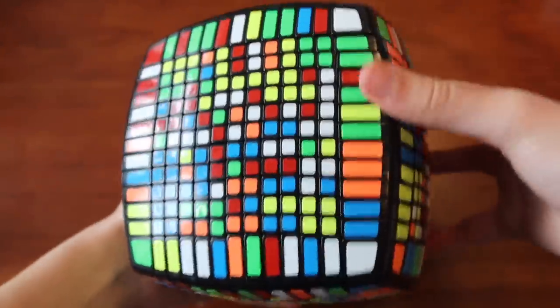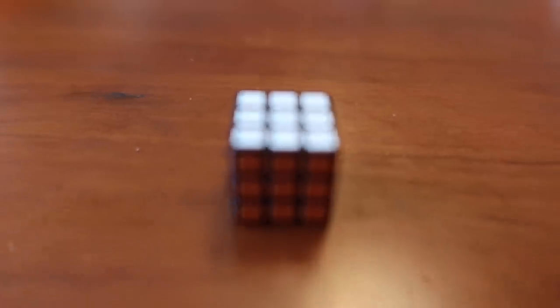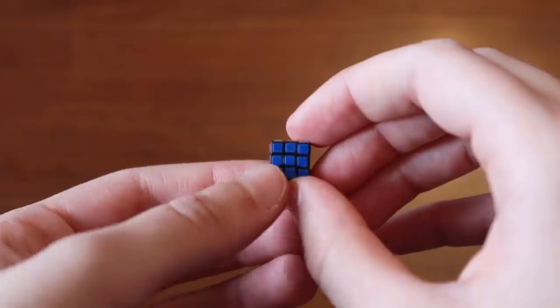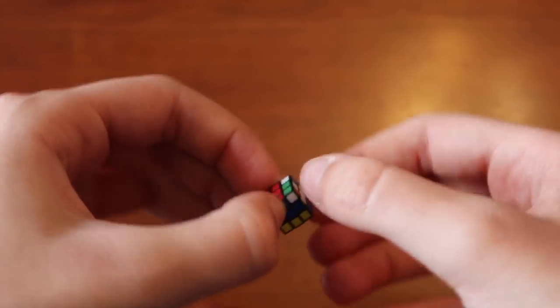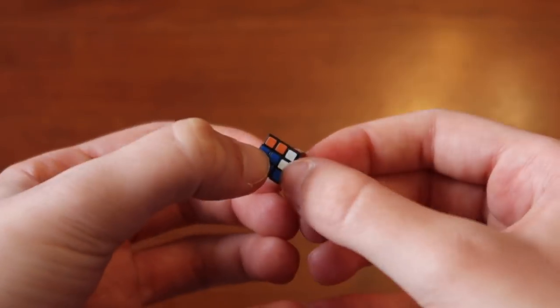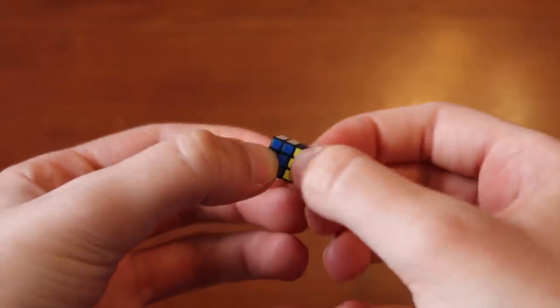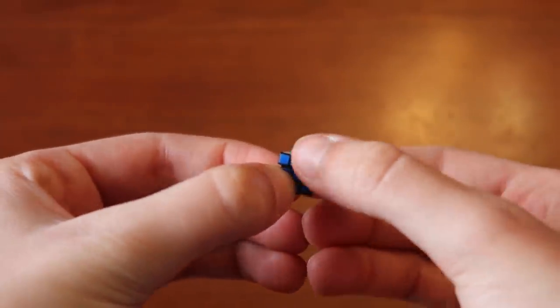And on the opposite end of the spectrum we have the 10 centimeter 3x3 which is so small that it's really hard to turn. You can pretty much only use your fingertips which gets really difficult after a while. It turns nice but it also has pretty much no corner cutting which makes it even harder, and it just kind of hurts your hands to have to hold them pinched down for so long while solving.